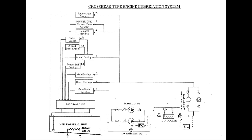From the crosshead, oil comes out into the slipper pads and is directly supplied to the white metal bearing. This provides lubrication between the guide and the slipper pads. Thereafter, oil falls back into the crankcase.